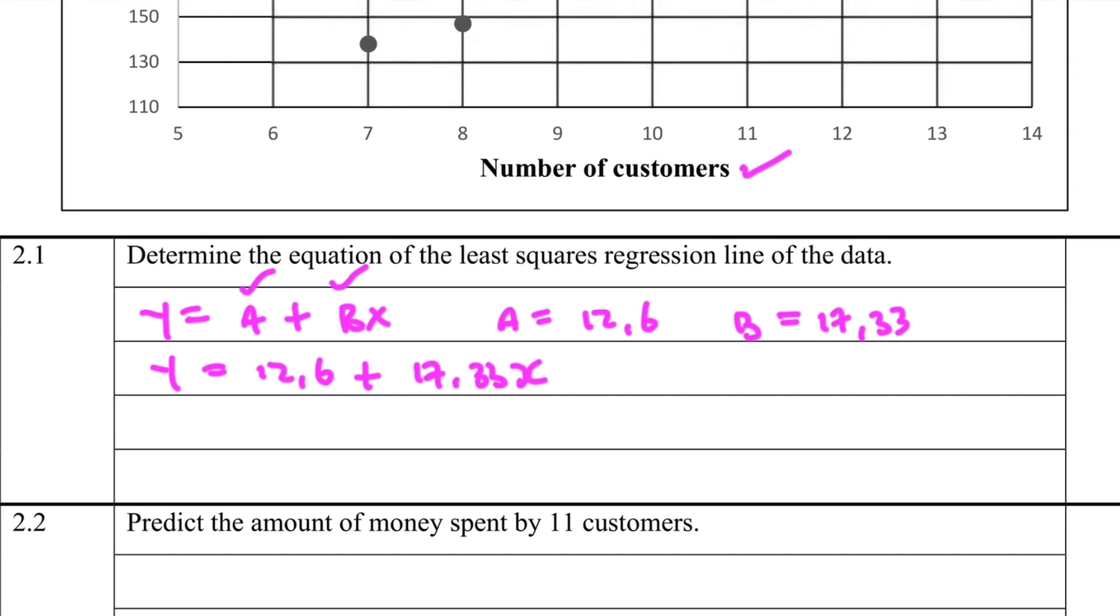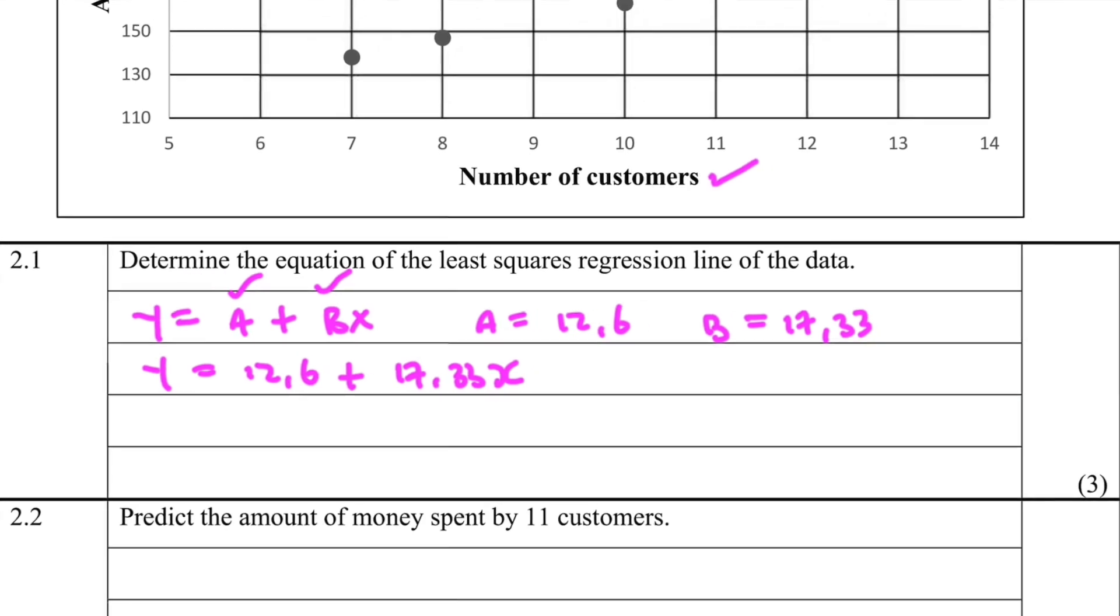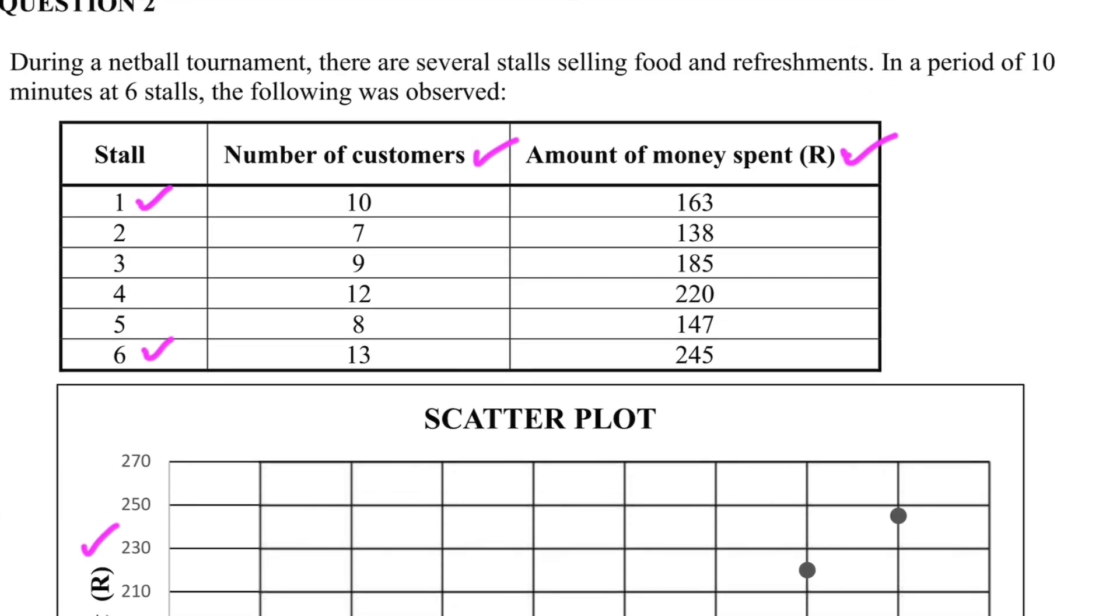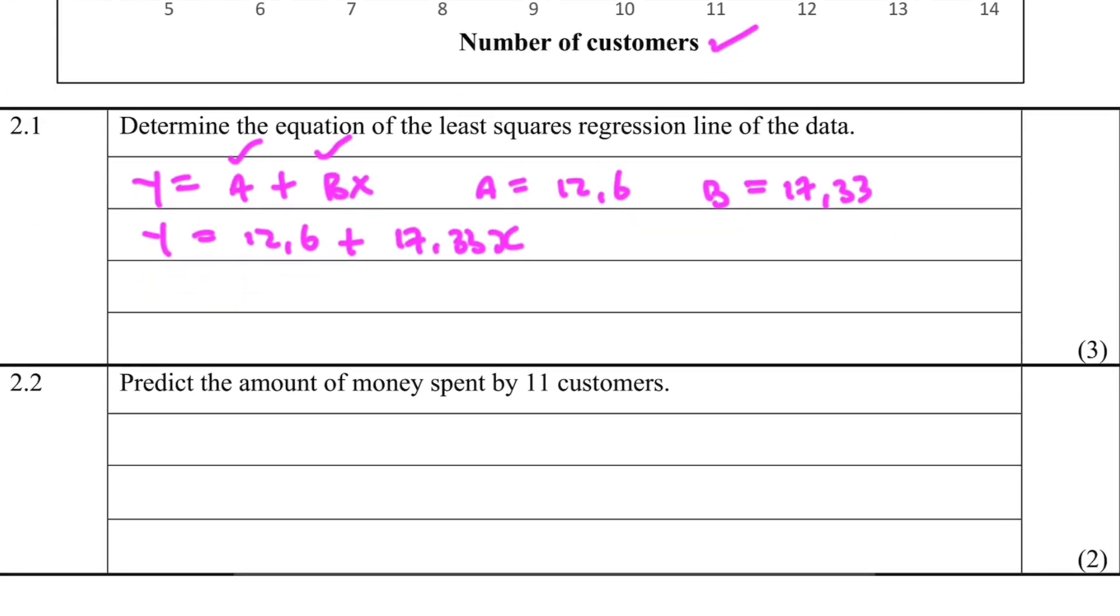So there we go, that is the equation to the least squares regression line. That is 2.1. Then 2.2: predict the amount of money spent by 11 customers. We have the number of customers as the x and the amount of money spent as the y. So it means that now because we have the equation, we can substitute.